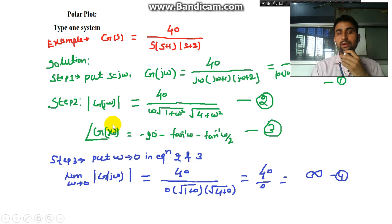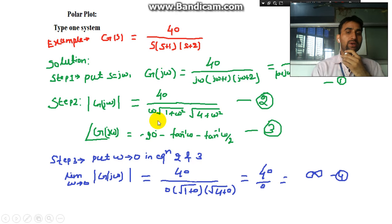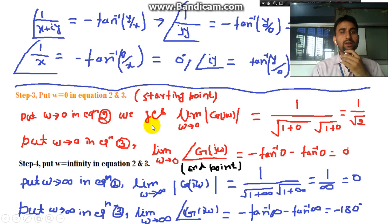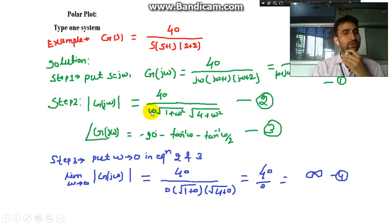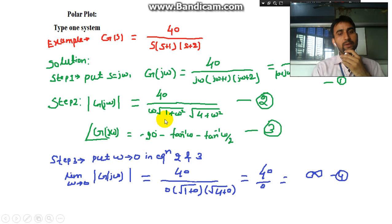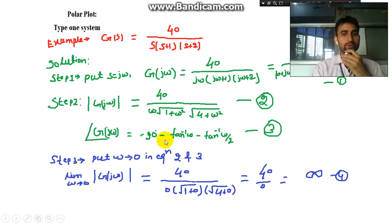The angle of G(jω) is found as follows: the angle of 1/jω is −90°, since if jω is in the numerator it contributes +90° and in the denominator −90°. For the term (1 + jω) the angle is −tan⁻¹(ω), and for (2 + jω) it is −tan⁻¹(ω/2). These give us the phase equation.